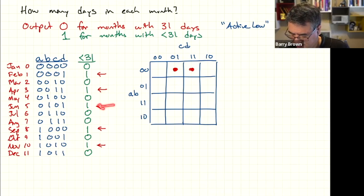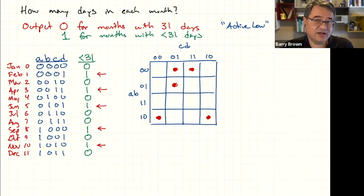The next one is in the 1000 box. And the last one is in the 1010 box. Okay, so there's our five dots.